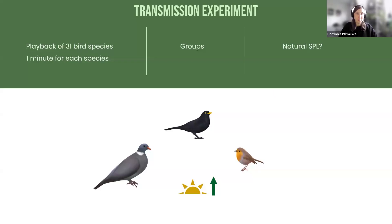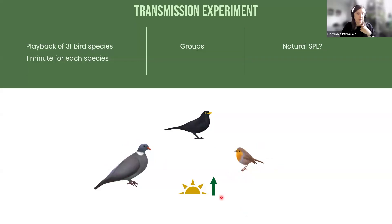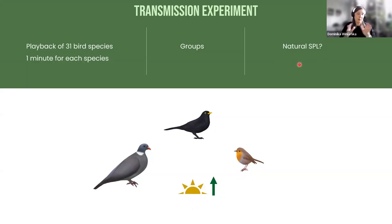What we played was playback of 31 bird species. Each species was played for one minute, and during that one minute we had at least two types of vocalizations. Species were divided into size-related groups: a large group with pigeons and the common cuckoo, a medium group with thrushes and woodpeckers, and a small group with all sorts of songbirds. The playback was done one hour after sunrise to avoid significant masking from the dawn chorus. We tried to play those vocalizations at their natural loudness.